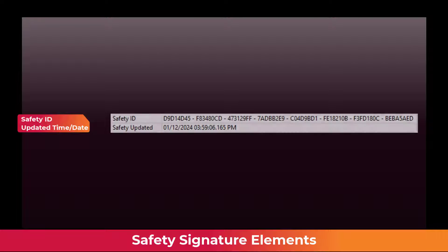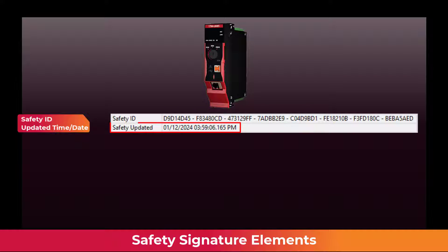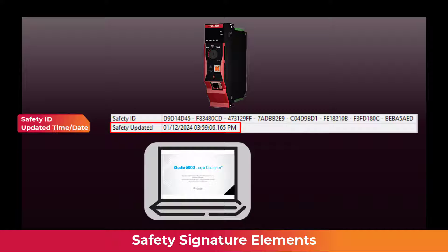The ID is generated by the GuardLogix controller and is the primary indication of safety integrity. The timestamp is generated by Logix Designer software and provides an indication of when changes were made, based on the PC time when the safety signature was generated.